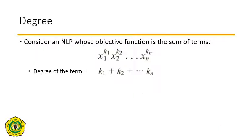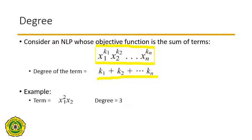First, let's see what degree means. Consider a non-linear programming problem whose objective function is the sum of terms of this type. Each term is a multiplication of decision variables where each variable is raised to a power — x1 to the power of k1, x2 to the power of k2, up to xn to the power of kn. The degree of a term is k1 plus k2 up to kn. For example, x1 squared times x2 has degree 3, and x1 times x2 has degree 2.